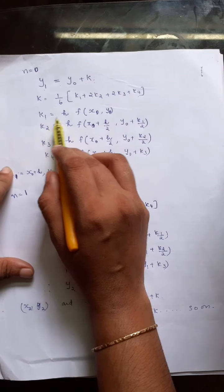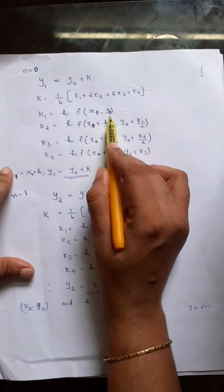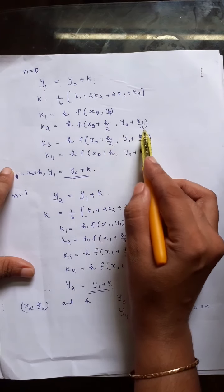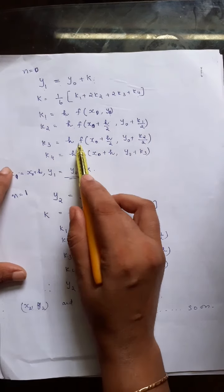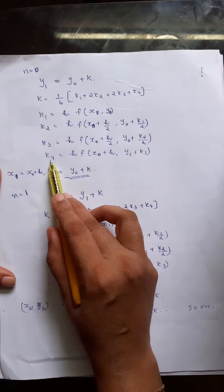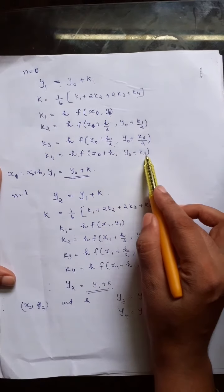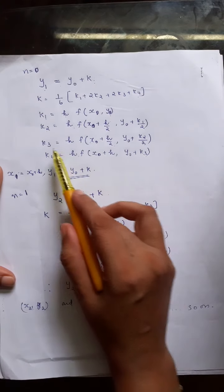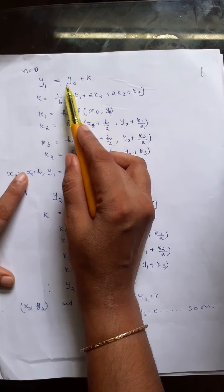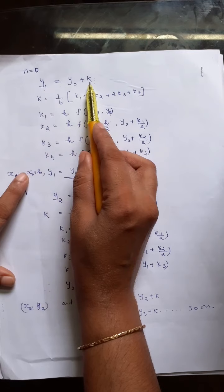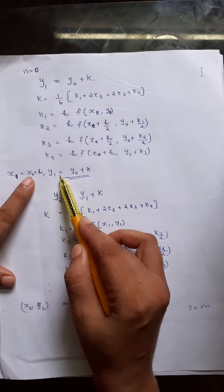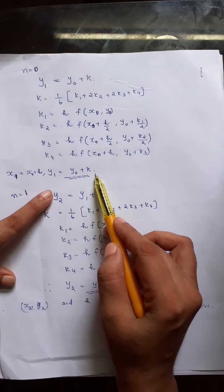Using x0, y0, and h, you find k1 = h·f(x0, y0), k2 = h·f(x0 + h/2, y0 + k1/2), k3 = h·f(x0 + h/2, y0 + k2/2), k4 = h·f(x0 + h, y0 + k3). Once you get k1, k2, k3, k4, you compute k, and then y1 = y0 + k, corresponding to x1 = x0 + h.